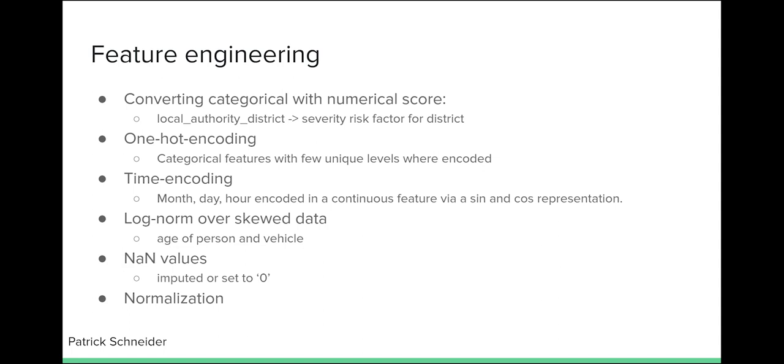First, I created a risk factor for each district, with the assumption that depending on the area the accident is happening, other risk probabilities are existing. A simple way is to take the severe to non-severe accidents for each district. The next step was to one-hot encode categorical features with a few unique levels. An example were the weekdays. For the time encoding, the date format was reduced to the day and hour, where the hour was encoded in a cyclic continuous feature via a sin and cos representation. The same for the day over a monthly cycle. The age of a person and age of vehicle showed a skewed distribution and was log normalized for the models. NaN values were imputed or set to zero, as well as the numerical values normalized.